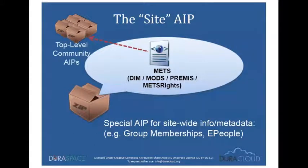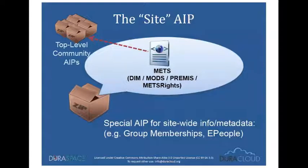There's also a special AIP generated when you back up your entire DSpace site, called the Site AIP. It doesn't describe an object within DSpace but describes your DSpace installation itself — basic metadata about the installation, its title, and links to the various top-level communities. Importantly, it holds all the groups that exist within your DSpace install and the EPeople that are members of those groups, allowing us to restore those groups and people whenever you need to do a full restoration.